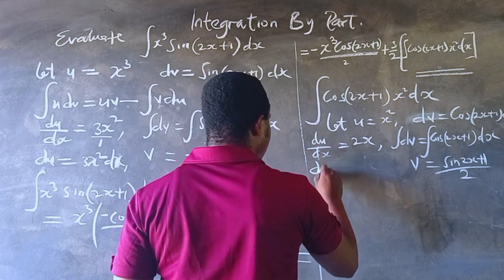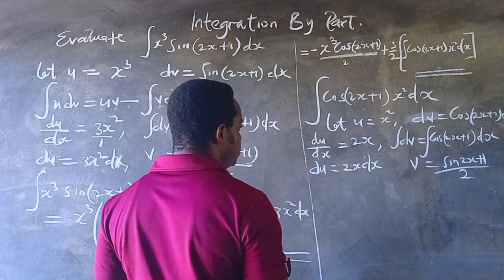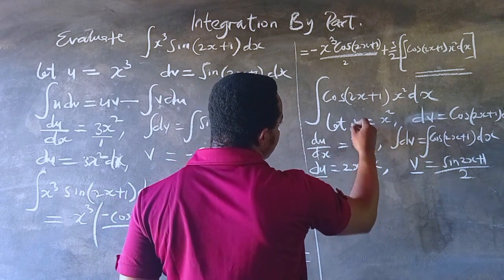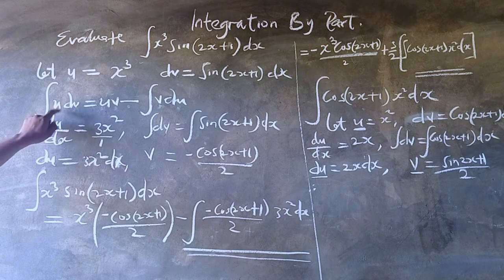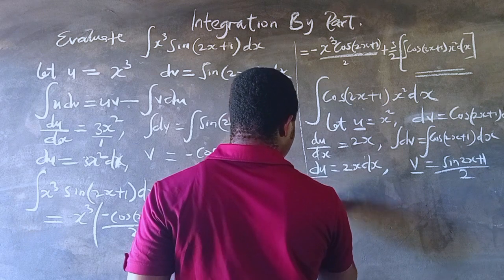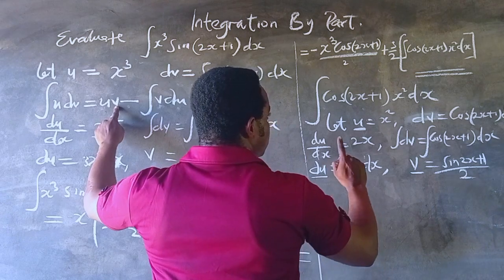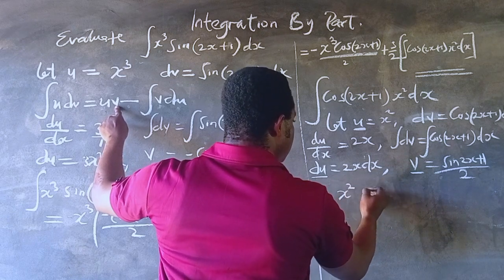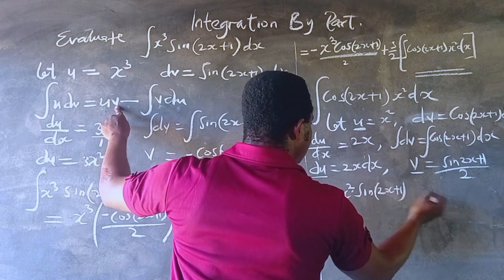What is the expression for du? du equals 2x dx. We have now obtained du, obtained v, and obtained u. Putting all this back into the formula, the integral equals u times v, where u is x squared and v is sin(2x+1) all over 2, so we have x² times sin(2x+1) all over 2.